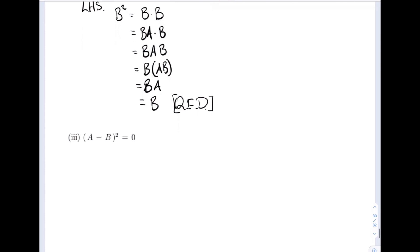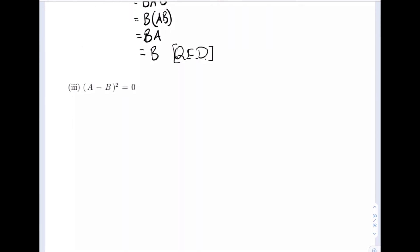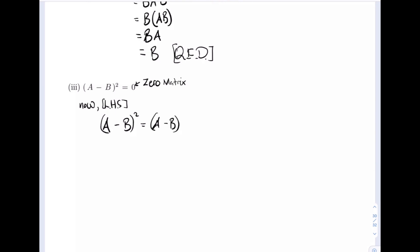Next we look at how we can prove that A minus B all squared is equal to zero — and here we want to keep in mind that this is the zero matrix, not the number zero. Taking our left hand side, we have A minus B all squared, which is equal to A minus B times A minus B. We rewrite this as A squared minus BA minus AB plus B squared.